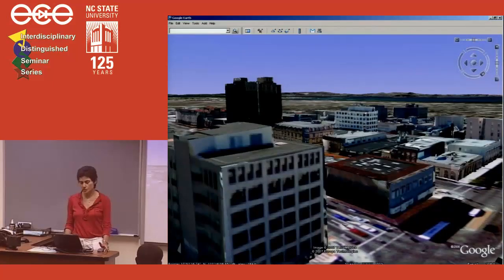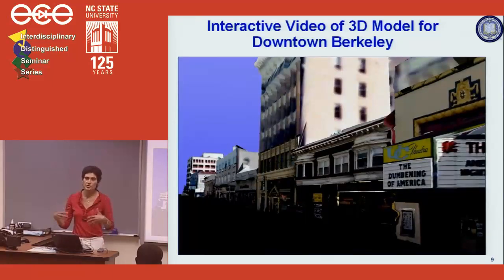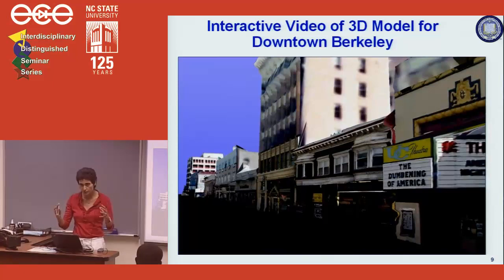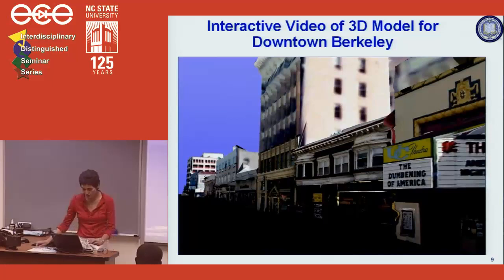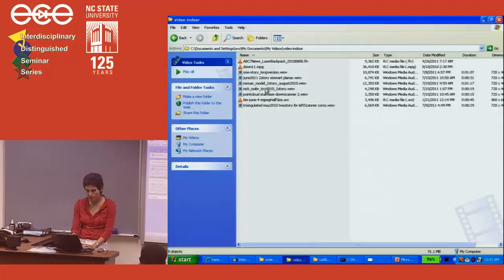This work was actually licensed by Google in 2007 to become part of 3D Google Earth. Some of the buildings that you see in major cities in the U.S. in Google Earth, like New York City and San Francisco, the 3D versions of those are derivative of this work. Let me show you a quick video of that work.